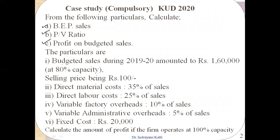Let's look at the budgeted sales. The first particular is budgeted sales during 2019-20 amounting to rupees 1,60,000, at 80% capacity of the plant. Selling price per unit is 100 rupees. Direct material cost is 35% of sales, direct labor cost is 25% of sales, variable factory overhead is 10% of sales, and variable administrative overhead is 5% of sales. Fixed cost amounts to rupees 20,000. A fourth calculation is also asked: calculate the profit if the firm operates at 100% capacity.